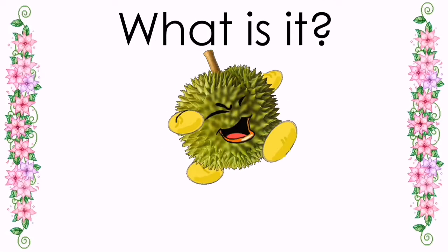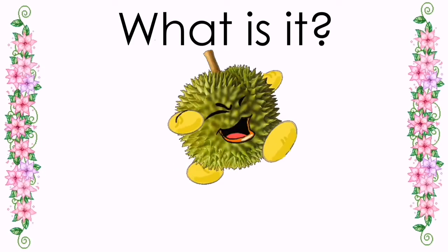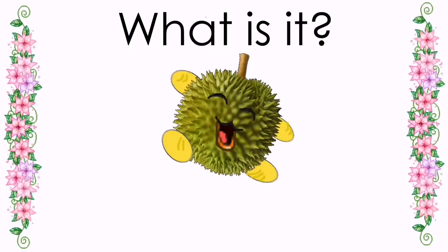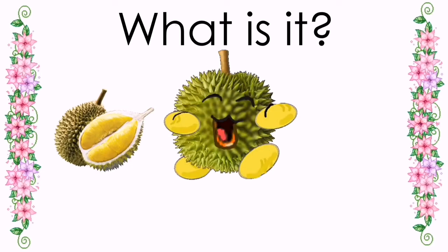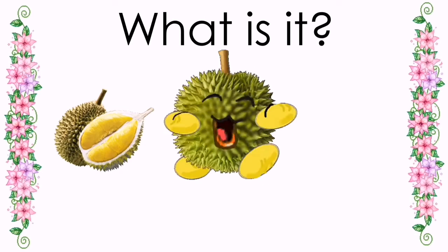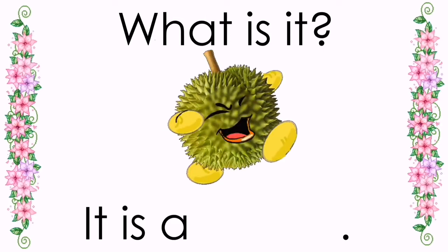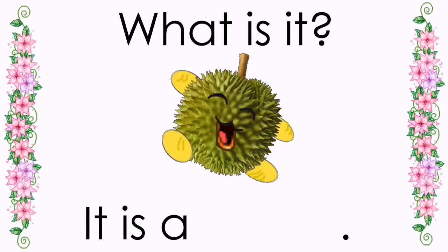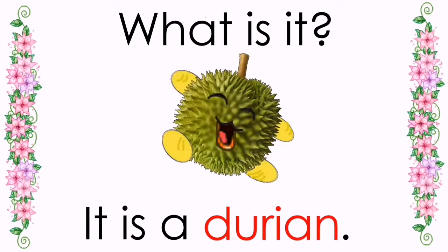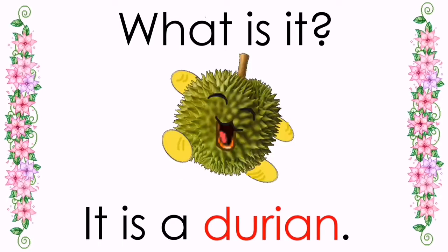Next, what is it? It is big, spiky, and has a hard outer shell. It is yellow or white inside. Great! It is a durian. Again, it is a durian.